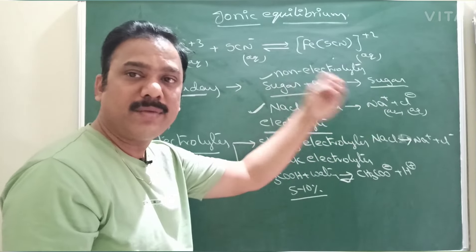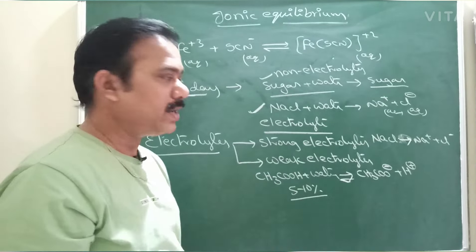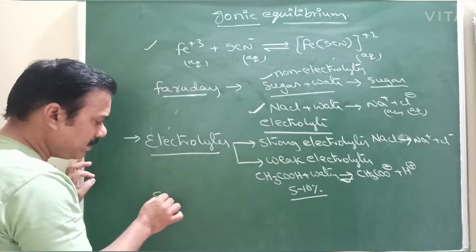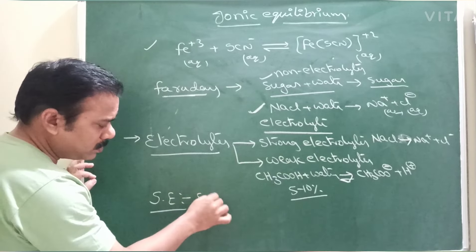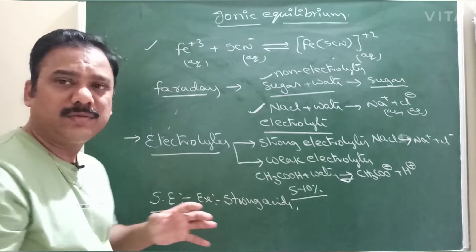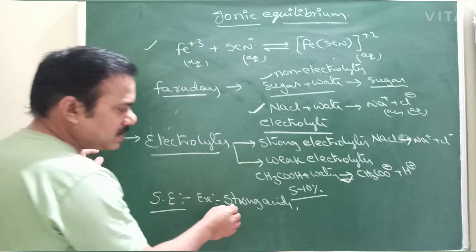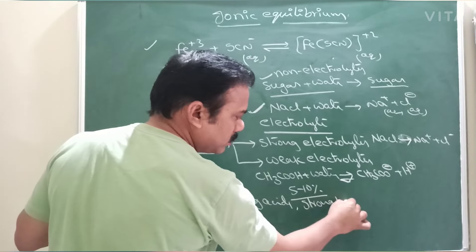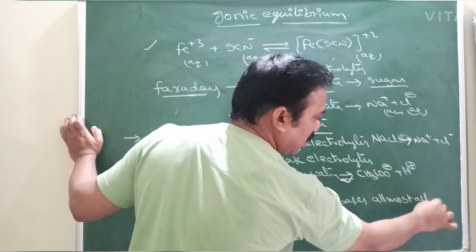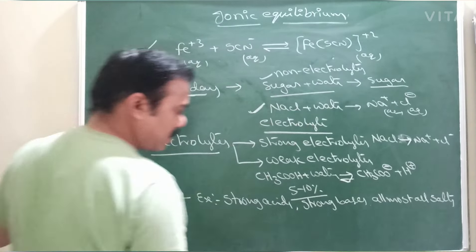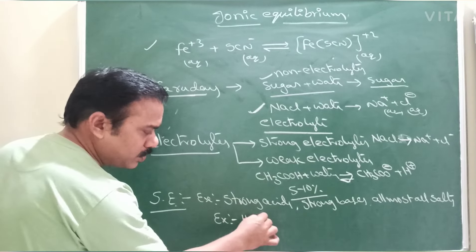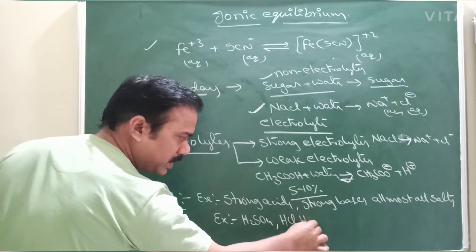Examples of strong electrolytes: strong acids, strong bases, and almost all salts behave as strong electrolytes. For example, strong acids — H₂SO₄ is a strong electrolyte, HCl is a strong electrolyte, HNO₃ is a strong electrolyte — because all these are strong acids and complete ionization occurs. Strong bases include NaOH, KOH, and similar compounds. Salts include NaCl, KCl, etc.